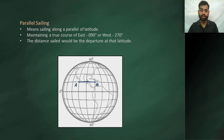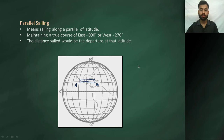If you look at this figure, what is the departure between A and B? Departure is nothing but the arc of the parallel of latitude contained between the meridians cutting the initial position and the final position. We can clearly see that this is the departure between A and B, and this is also the distance travelled between A and B. So when travelling on the same latitude, distance travelled is equal to the departure at that latitude.